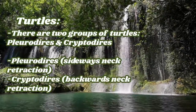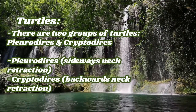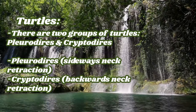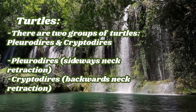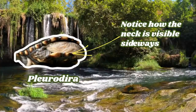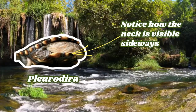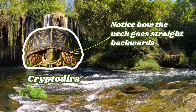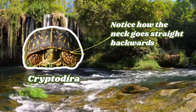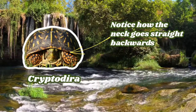There are turtles that retract their neck sideways, meaning their neck is visible from the front when they retract it, and there are turtles that retract their neck backwards, meaning it is not. Here is an example of a turtle that retracts its neck sideways — you can see it's fully visible from the front. And here is a turtle that retracts its neck backwards; you can see that you can't see the neck when the turtle's head is in its shell.